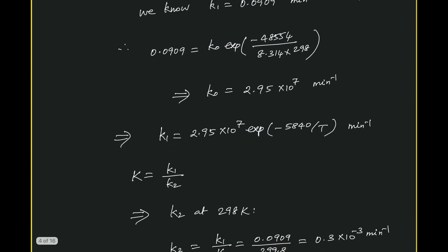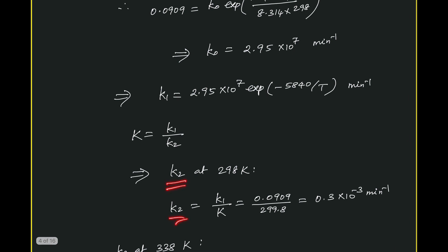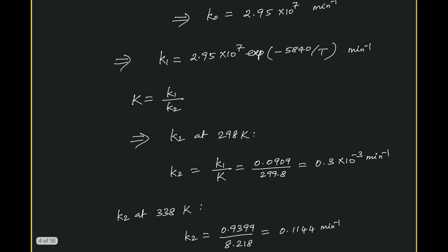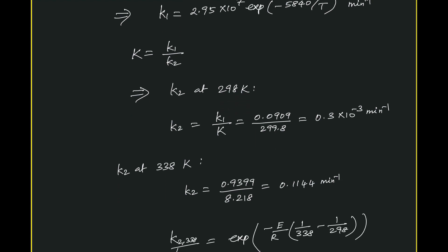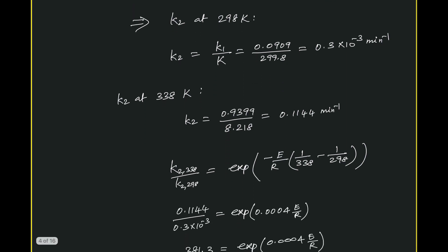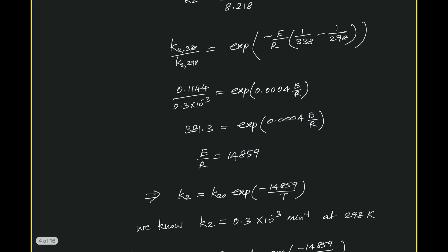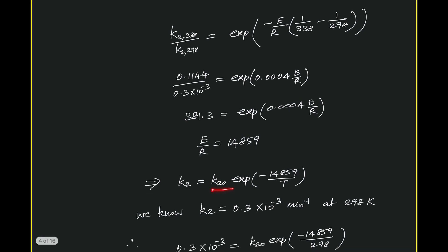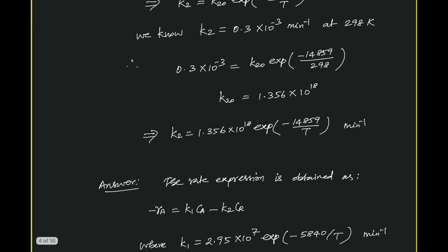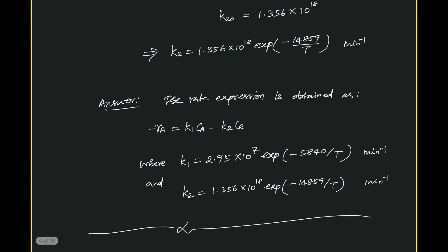Now we use the equilibrium constant relation K1/K2 equals capital K. Since capital K is already available at two temperatures, we can get K2 at two temperatures. K2 at one temperature and K2 at the other temperature are obtained simply from this relation. Then, just as before, using the two values of K2, we get the pre-exponential factor K2-naught and the activation energy E2.